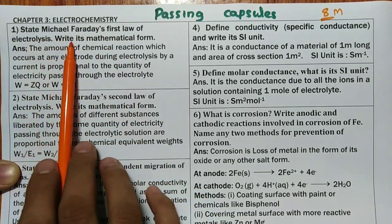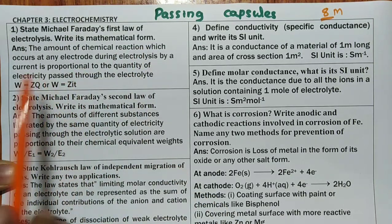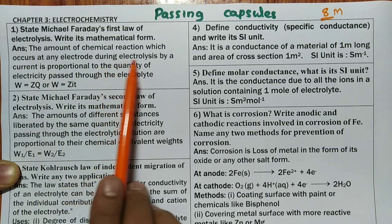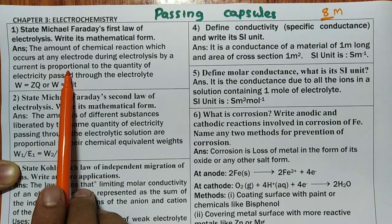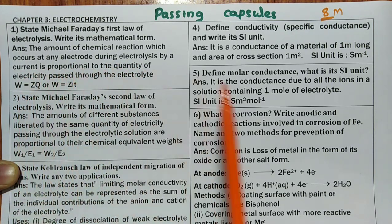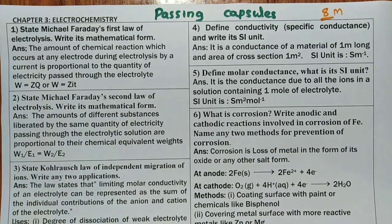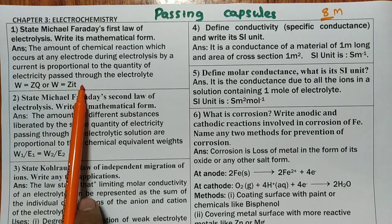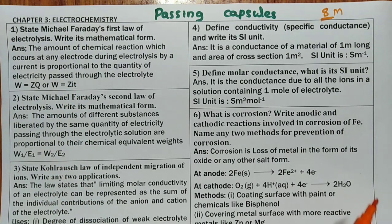State Michael Faraday's first law of electrolysis and write its mathematical form. The amount of chemical reaction which occurs at any electrode during electrolysis by current is proportional to the quantity of current passed. The amount of substance deposited at the electrode is directly proportional to the current passed through the electrolyte. The mathematical expression is: W = z × q, and since q = i × t, we get W = z × i × t.